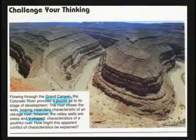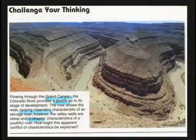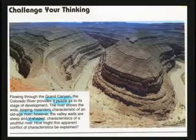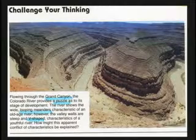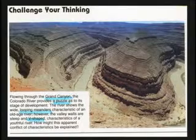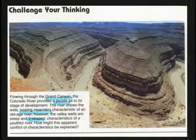This textbook says: 'Flowing through the Grand Canyon, the Colorado River provides a puzzle as to its stage of development. The river shows wide looping meanders, characteristic of an old-age river. However, the valley walls are steep and V-shaped, characteristic of a youthful river.' Steep sides indicate fast-moving water; looping indicates slow-moving water. They're wondering how that river made that canyon — but the river didn't make that canyon.